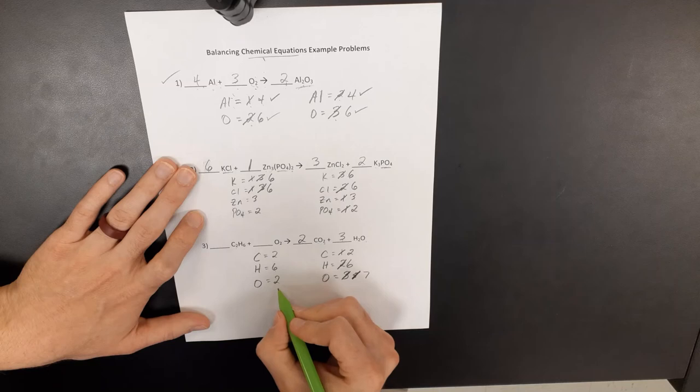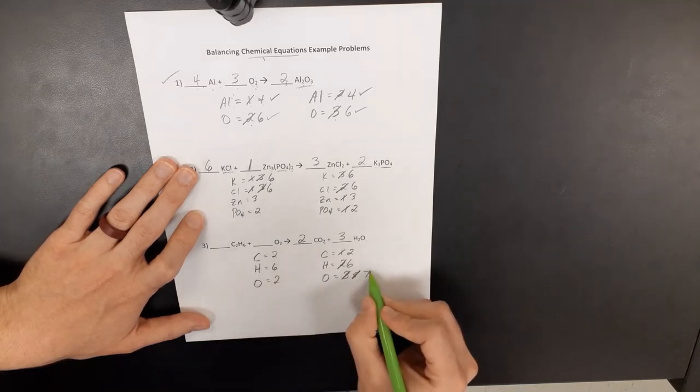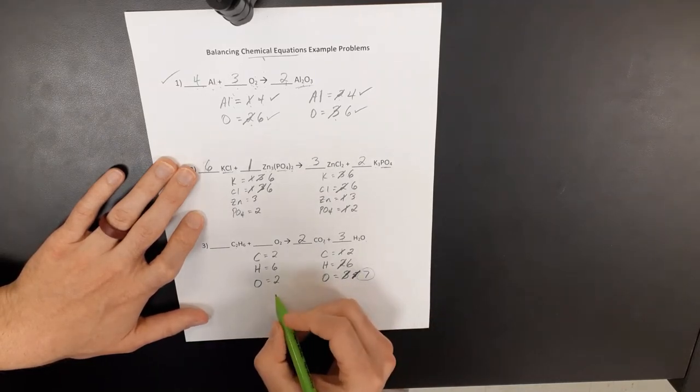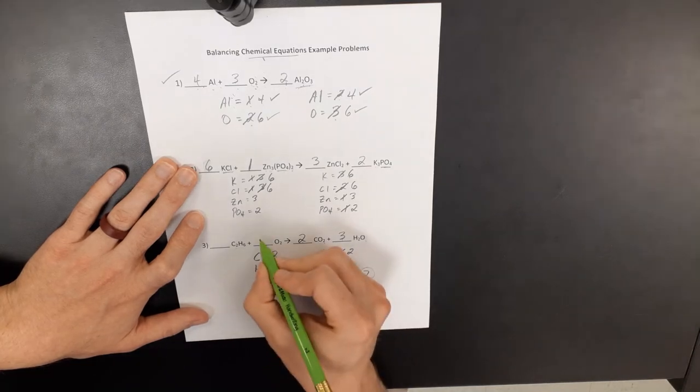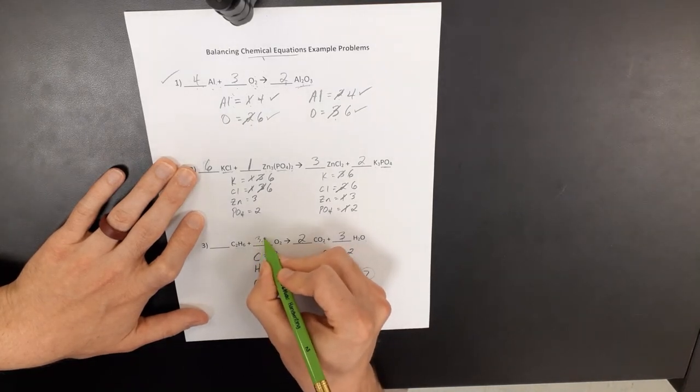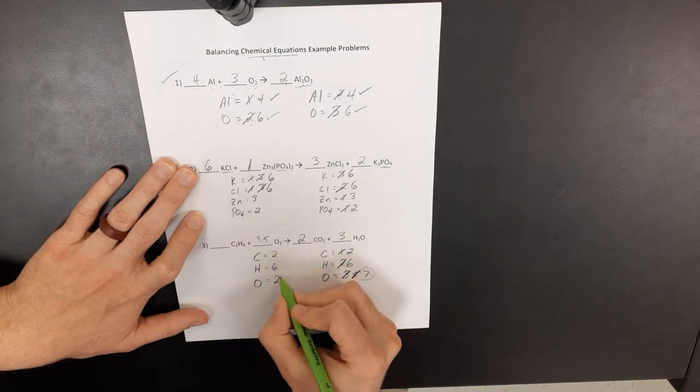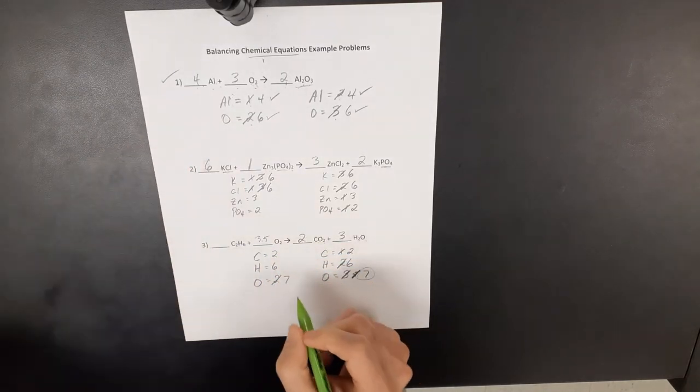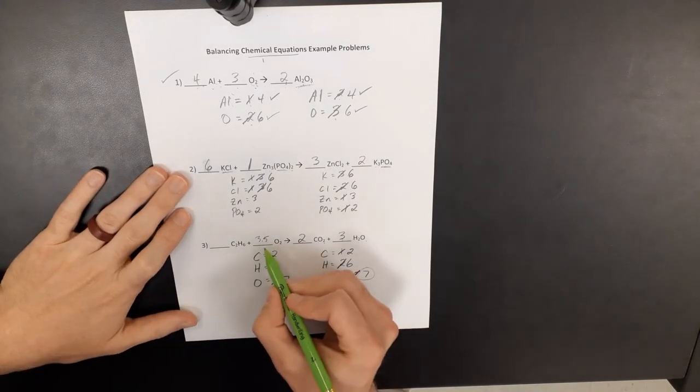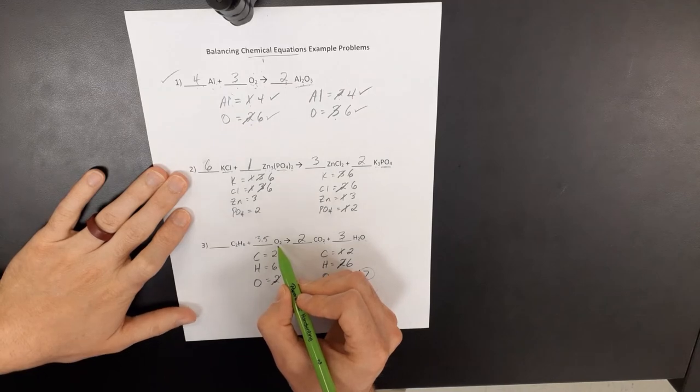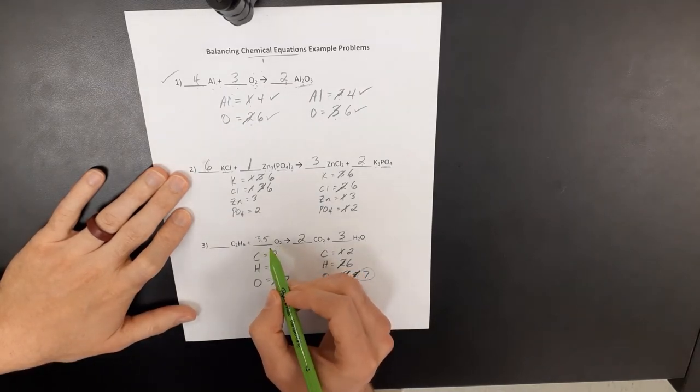All right, so here I'm looking at this and I'm saying, okay, I have seven oxygen atoms. How can I get seven over here? Well, you could think of it as if I do 3.5 times two, that would give me seven. The problem is you can't have a half of a molecule. So I can't leave this as 3.5.